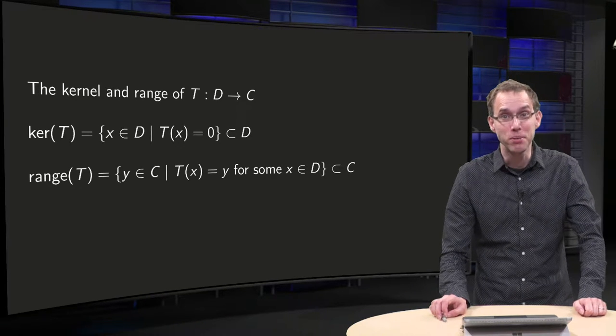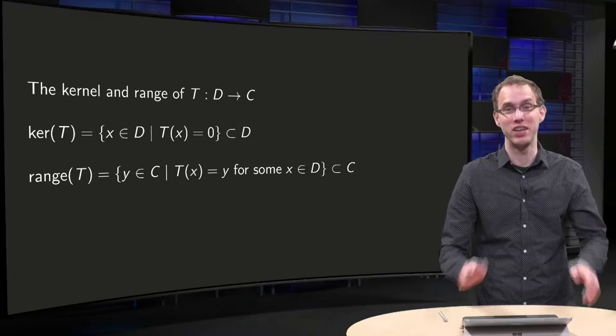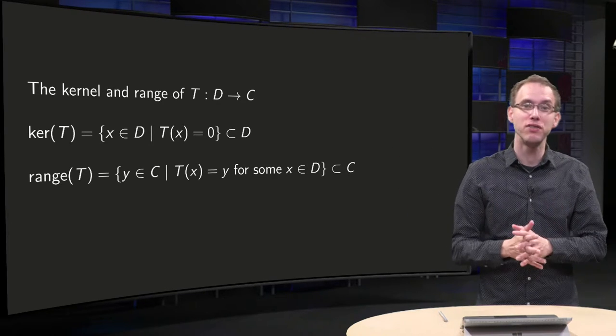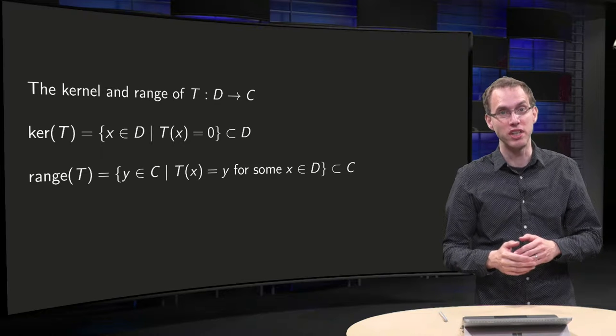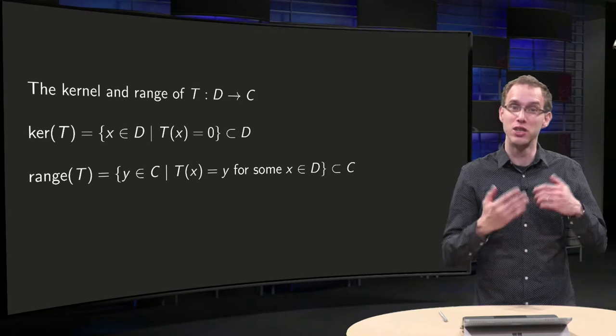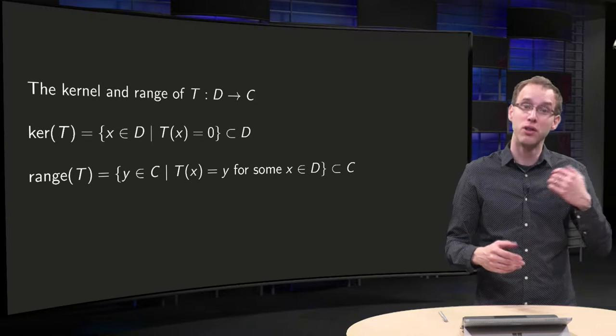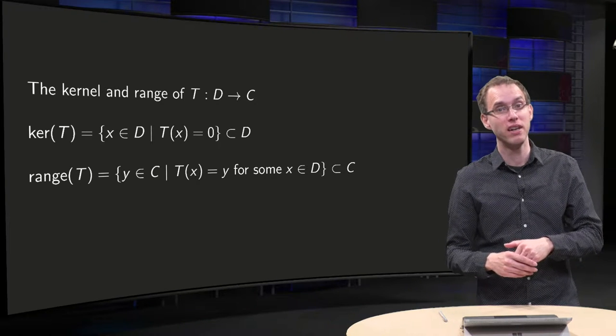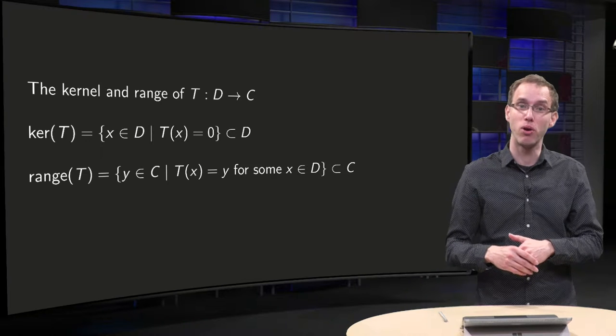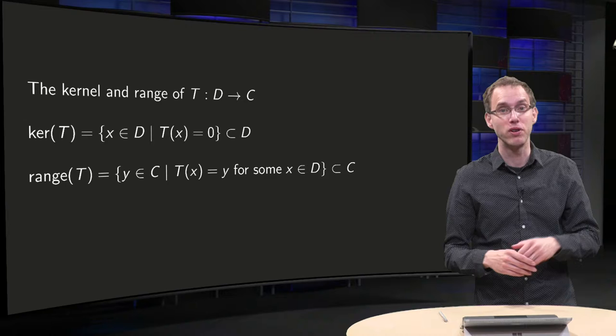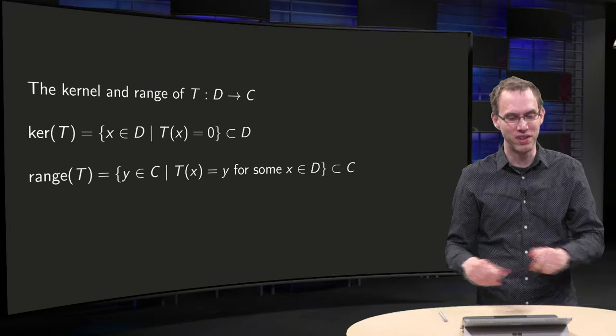A function is a prescription that links every value in its domain to a value in its codomain. In this video we'll encounter two other sets that are very important for functions: the kernel of a function and the range of a function. The kernel is a subset of the domain and the range is a subset of the codomain. What are these sets and why are they important? That's what you will learn in this video.